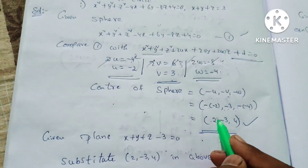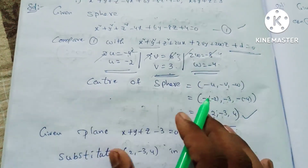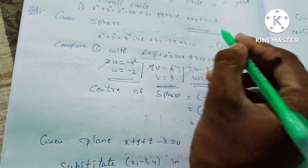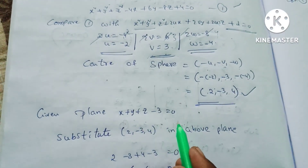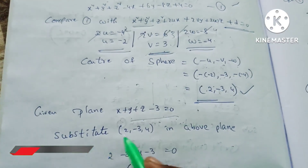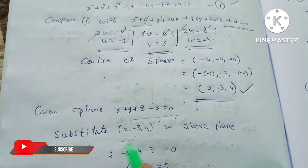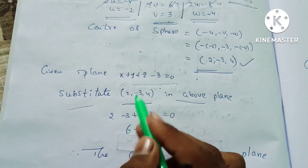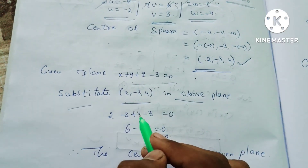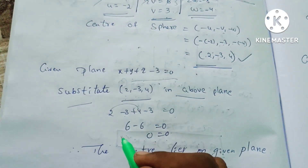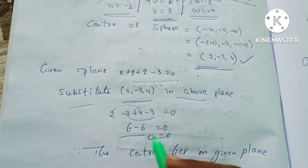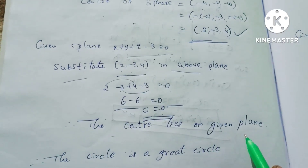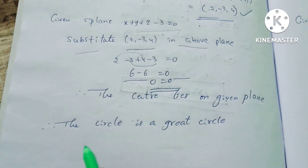Now we substitute the center into the given plane equation. Substituting: 2 + 4 = 6, and -3 - 3 = -6, so 6 - 6 = 0. Since the result is 0, the center lies on the given plane. Therefore, if the result equals 0, it is a great circle.